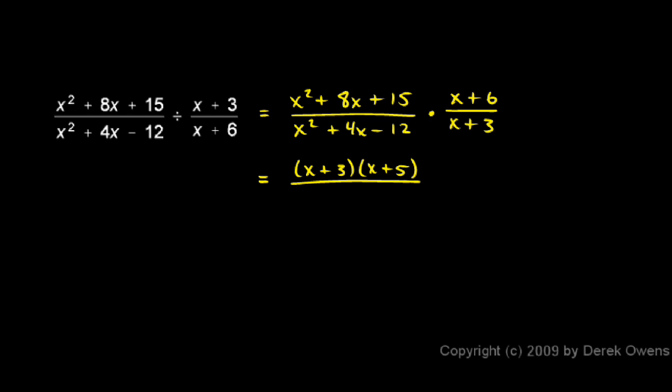Now let's do the same thing in the denominator here. x squared plus 4x minus 12, you might see that that's going to factor as x plus 6 times x minus 2.